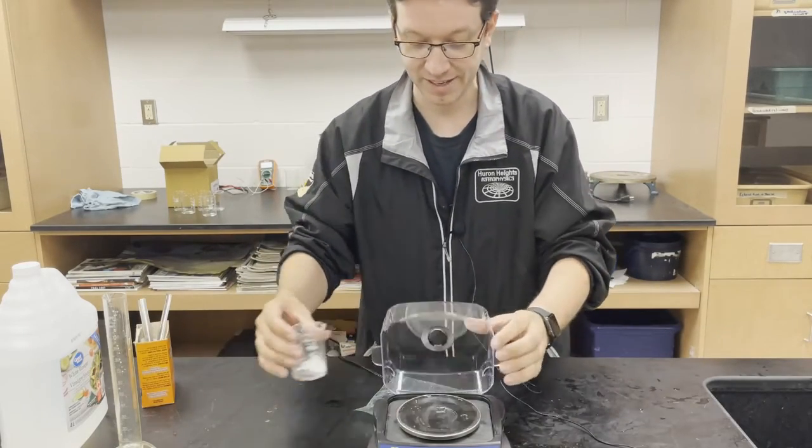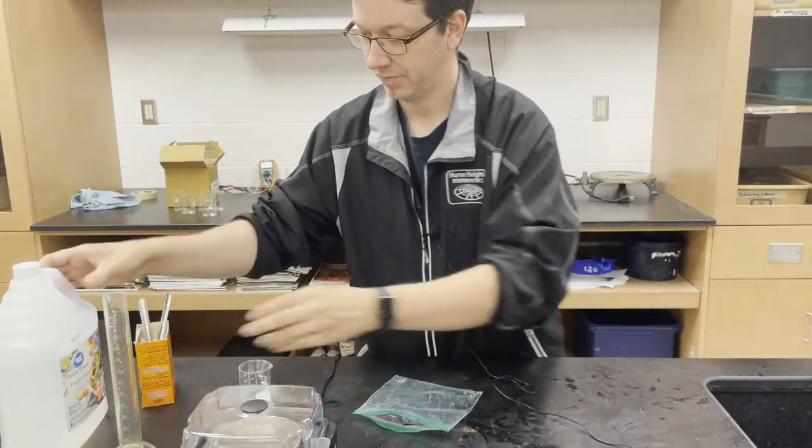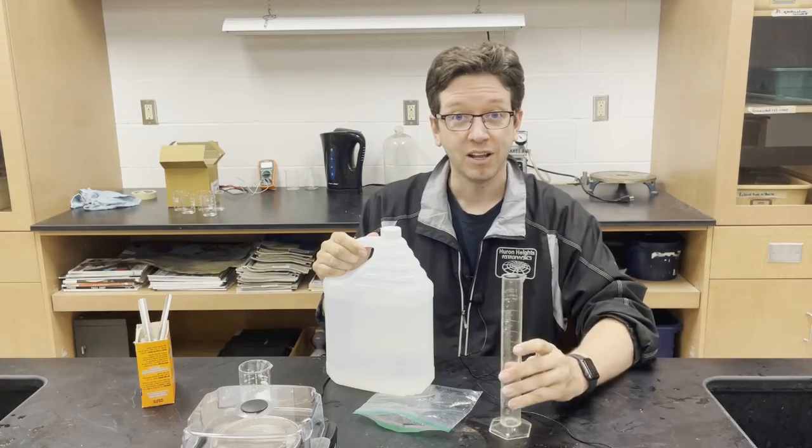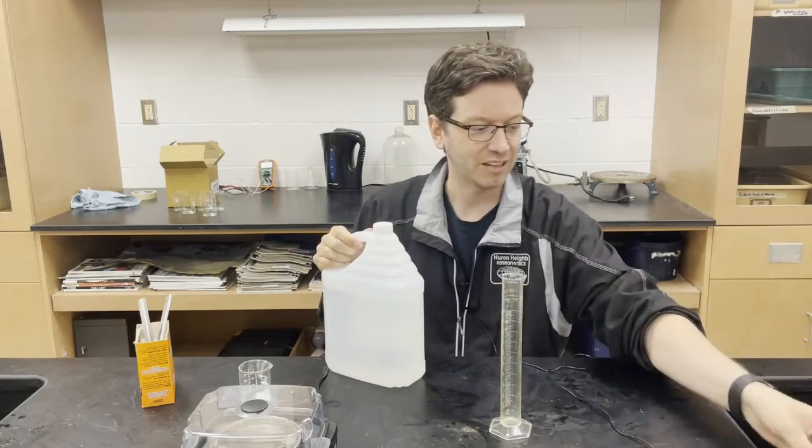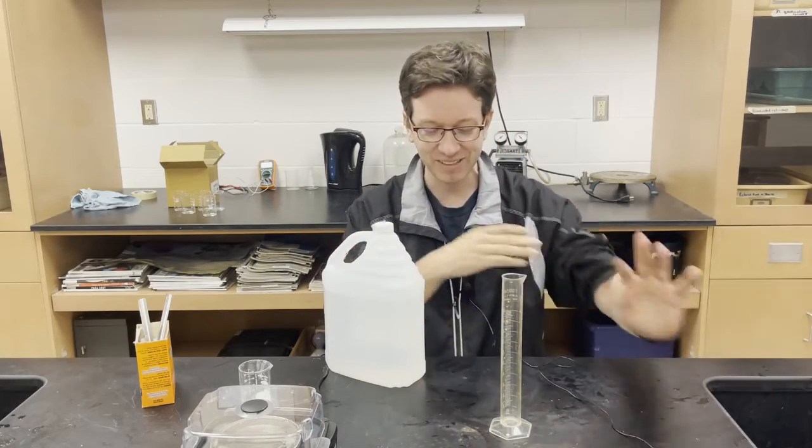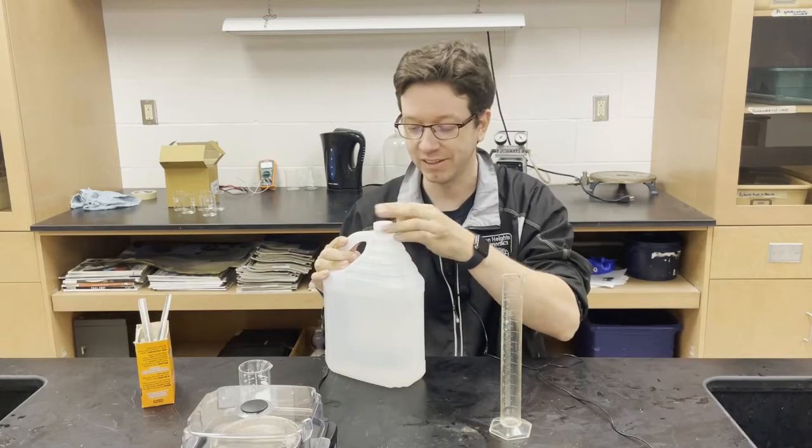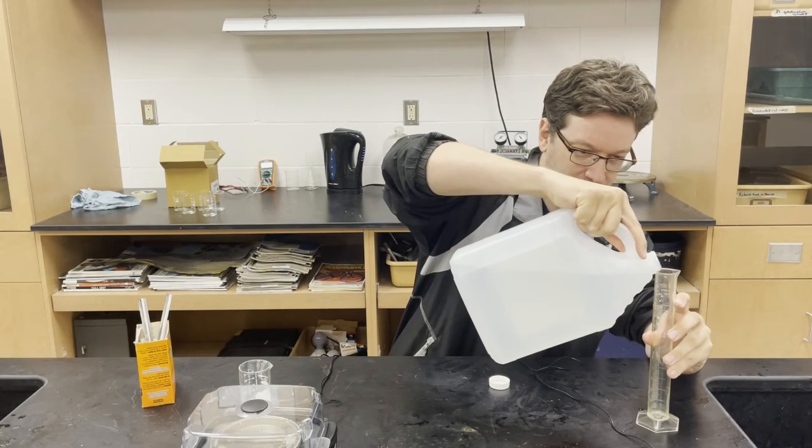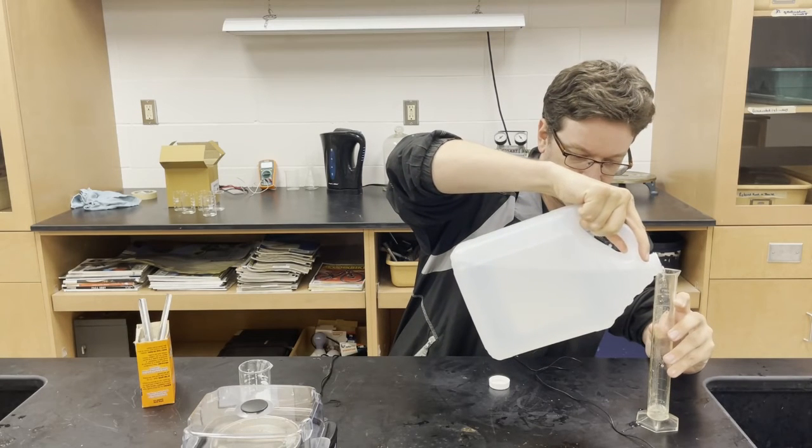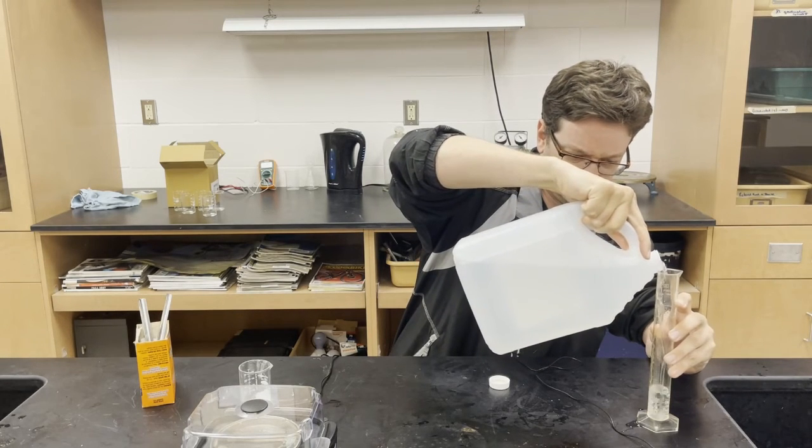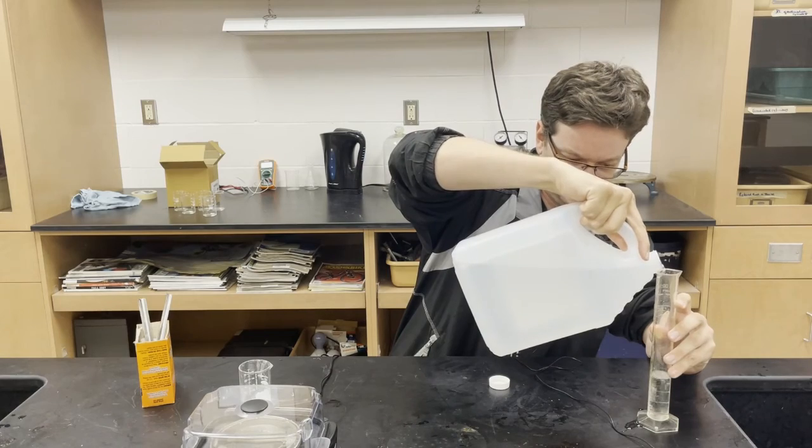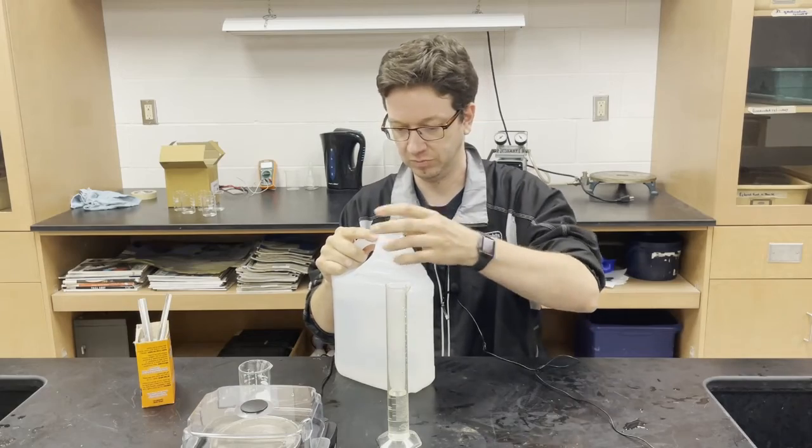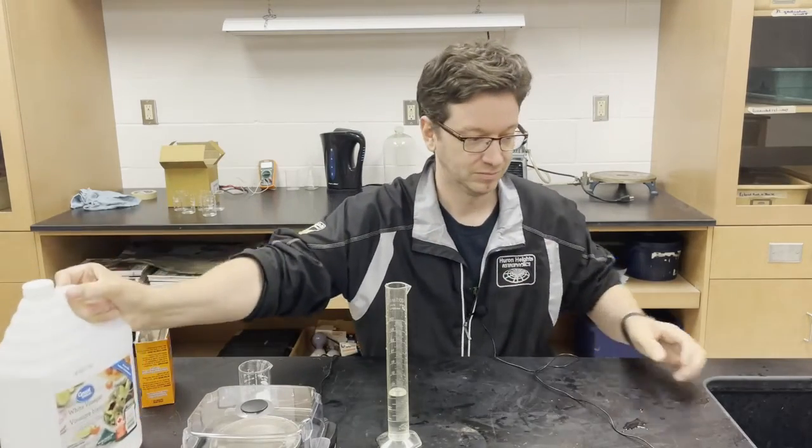All right, so we have our baking soda and we also calculated we need 37 milliliters of vinegar. Now vinegar I want to be in excess, so let me just add a bit more and we'll make it 40 milliliters.